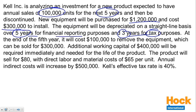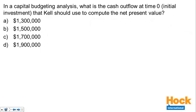We've got purchase, production over five years, a sale at the end, depreciation, and additional working capital of $400,000. Our first question is: in capital budgeting analysis, what is the cash outflow at time zero — the initial investment — that KEL should use to compute the present value?